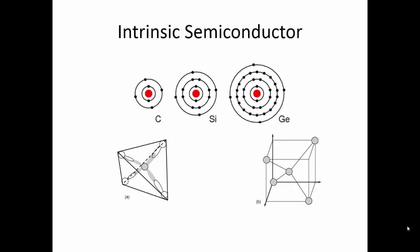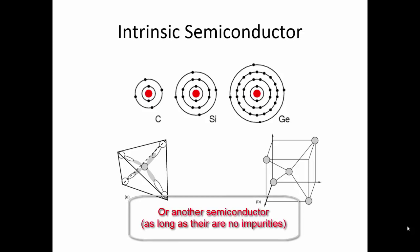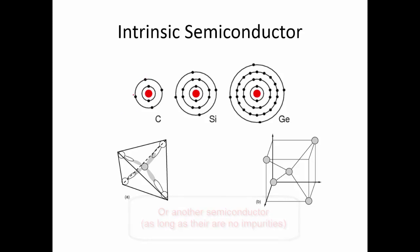Carbon, silicon, and germanium are all semiconductors. When I say intrinsic semiconductor, what I mean is it's a pure semiconductor — it's made up of only elements carbon, silicon, or germanium. What makes these semiconductors is the fact that they have four electrons in the valence shell, and here we're only looking at it in a two-dimensional view.